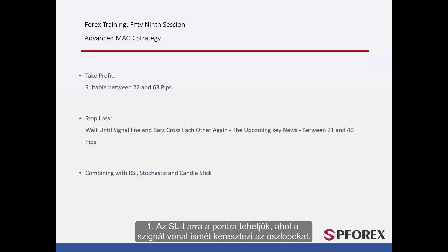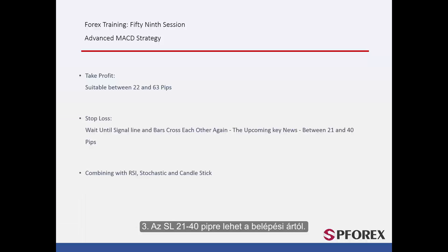Stop loss price can be determined with different methods: 1) SL can be placed on the spot where the signal line passes the bars again; 2) SL can be specified based on the analysis of future major calendared news; 3) SL can be 21 to 40 pips away from an entry price.